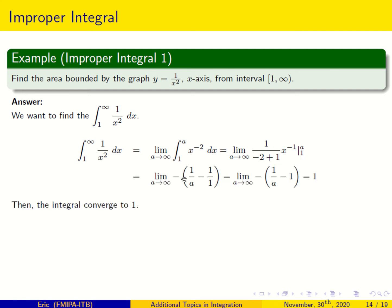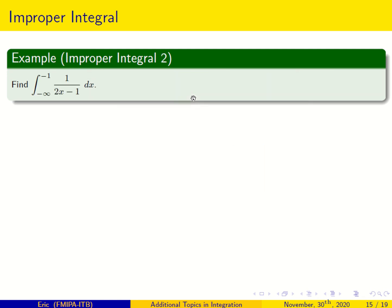Pulling the minus sign out of the integral, we have 1 over a minus 1 over 1. Taking the limit as a goes to infinity, 1 over a goes to 0, and minus times minus gives plus 1. So the integral converges to 1 — the area bounded by the graph is 1. Let's see another example.